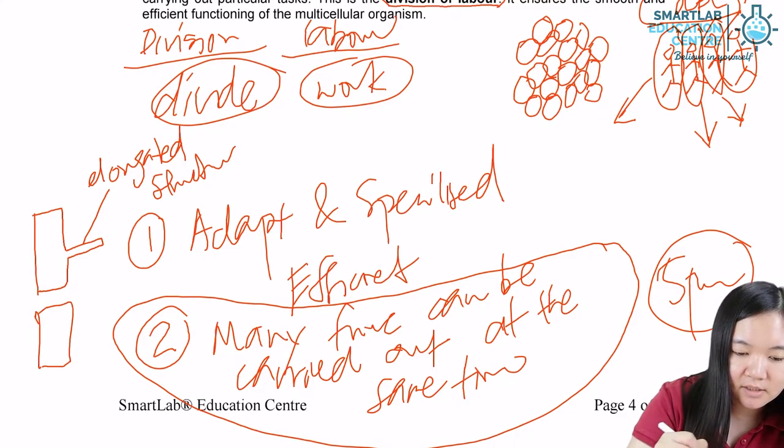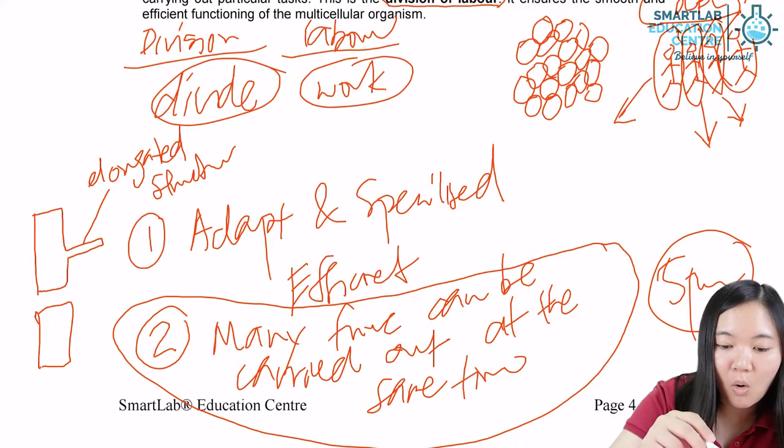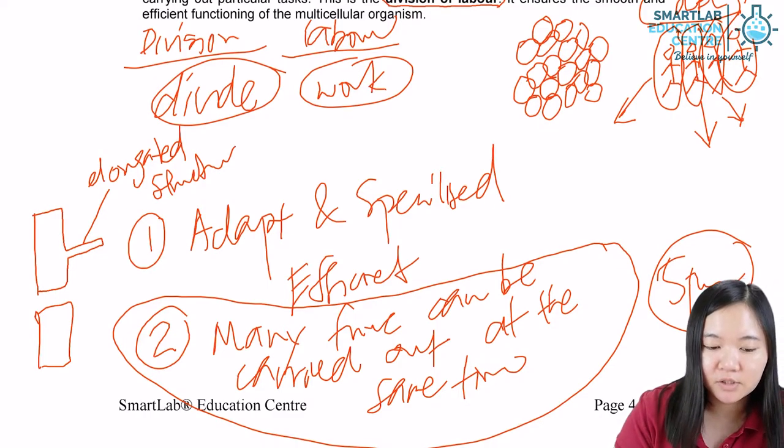This elongated structure allows it to absorb water and mineral salts better than other cells. Other cells are like this. Because its function is to absorb water and mineral salts, only it can afford to have elongated structure.